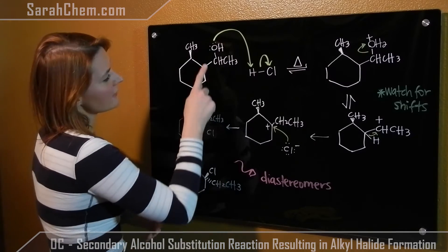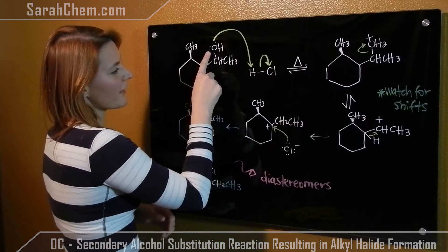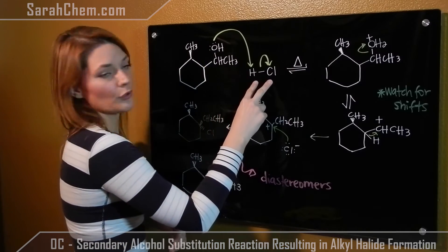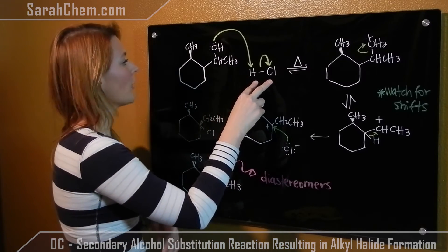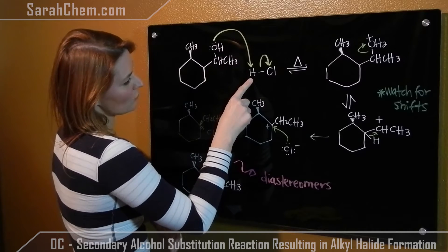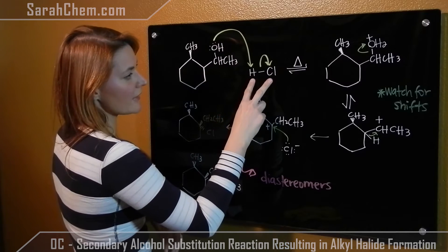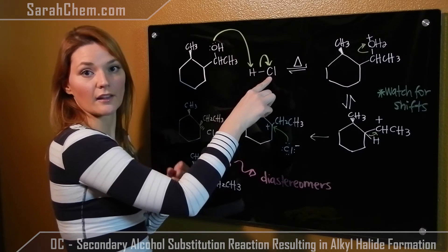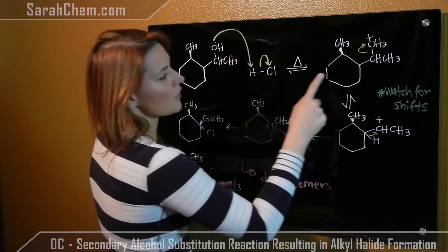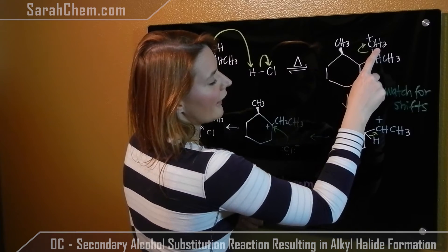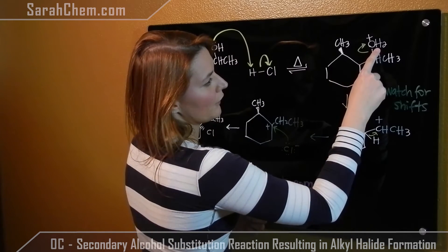In this case, we're going to activate it by protonating it with hydrochloric acid. So your O will attack the hydrogen, breaking this bond, causing the chloride to take the electrons with it. The result is here we have our protonated alcohol group.